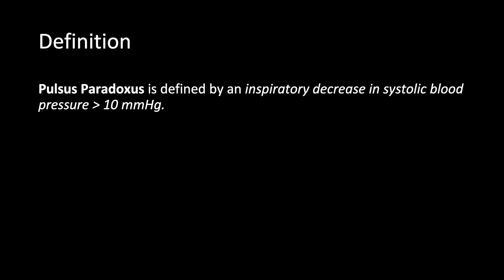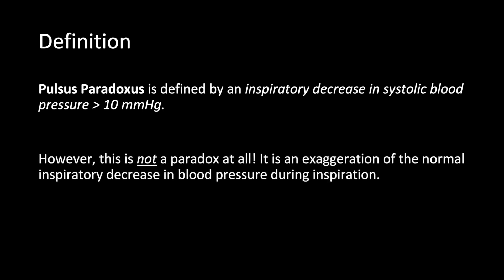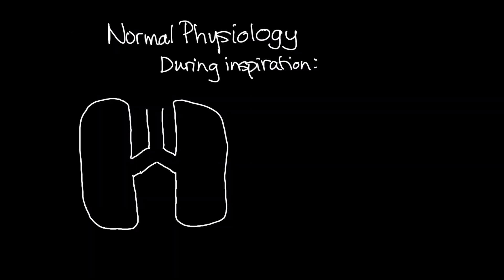But what is a pulsus paradoxus? Pulsus paradoxus is defined by an inspiratory decrease in systolic blood pressure that is greater than 10 millimeters of mercury. But why is that a paradox? It's not a paradox — it's an exaggeration of the normal physiology. So let's begin by exploring the normal physiology.